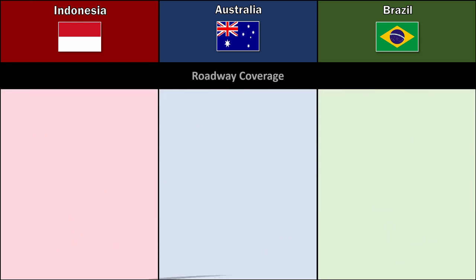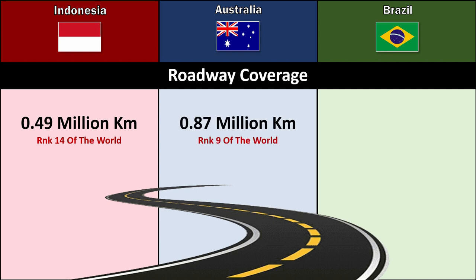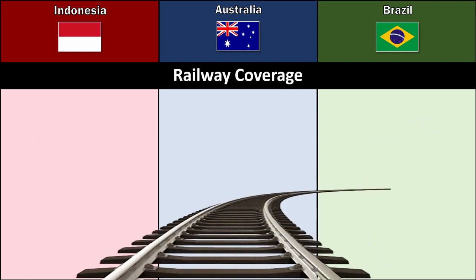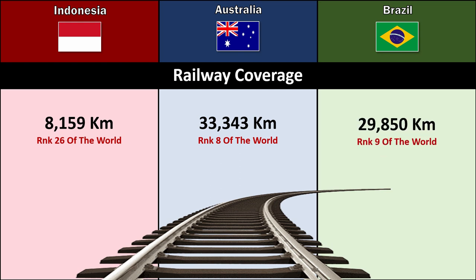Roadway Coverage: Indonesia 0.49 million km, Australia 0.87 million km, Brazil 2 million km. Railway Coverage: Indonesia 8,159 km, Australia 33,343 km, Brazil 29,850 km.